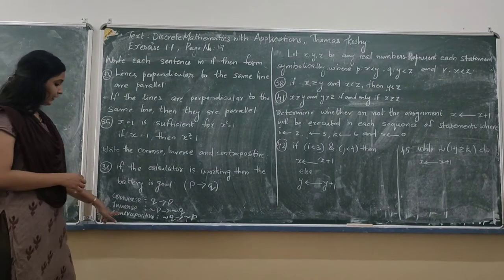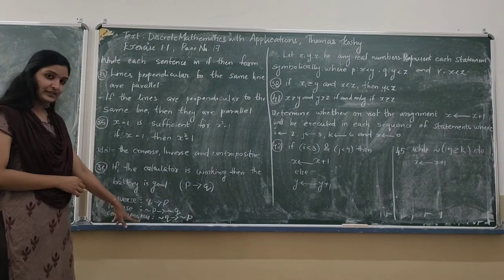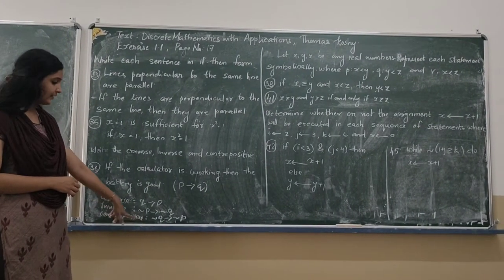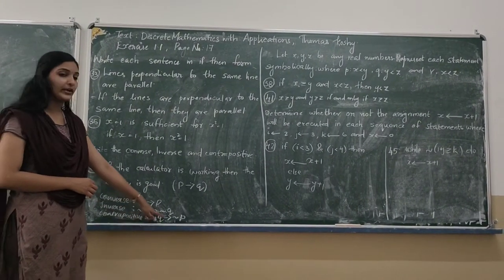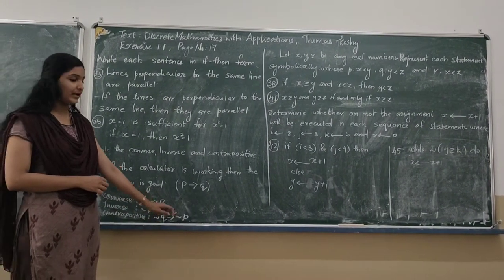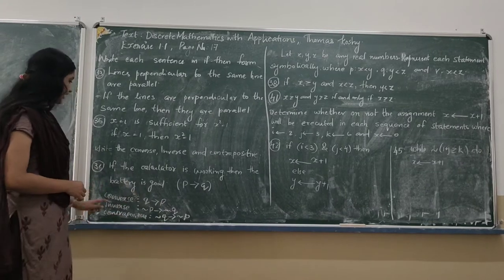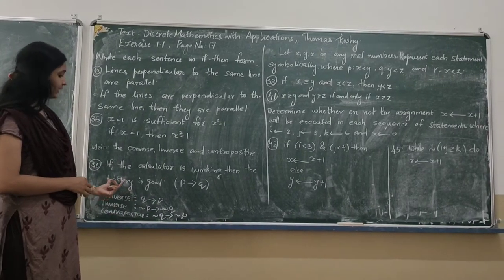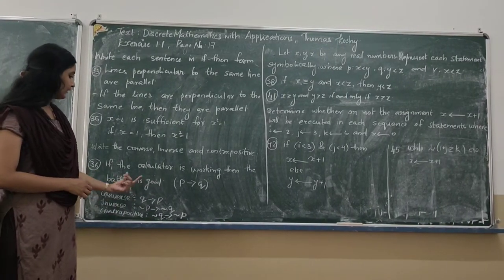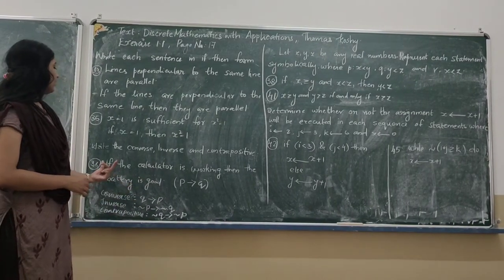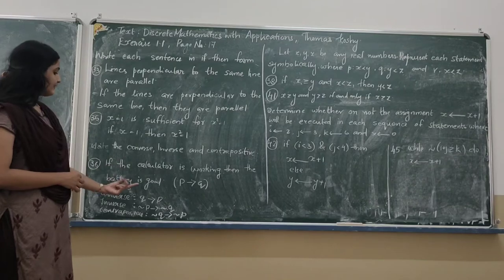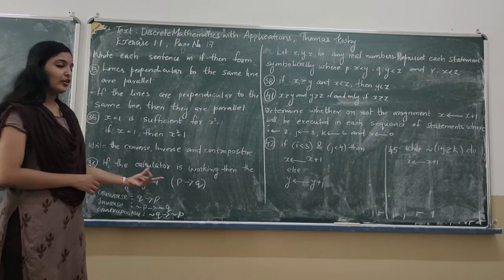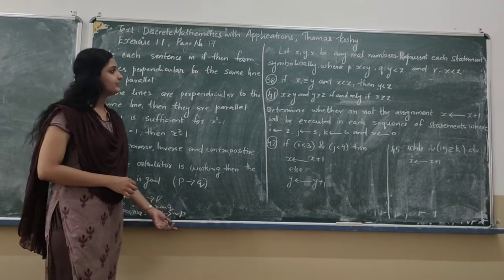Next we find the contrapositive of the statement. That is negation Q implies negation P. So negation Q means the battery is not good, so: if the battery is not good then the calculator is not working.